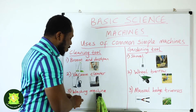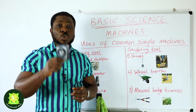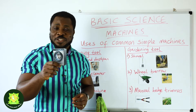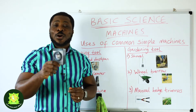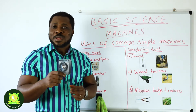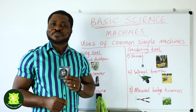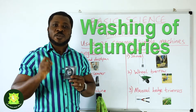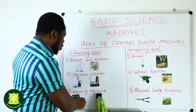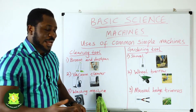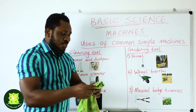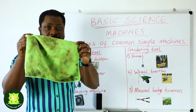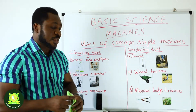Another good example of a cleaning tool in our home is the washing machine. What do you use a washing machine to do? The washing machine is used for washing laundry. Laundry is your dirty clothes and your dirty linen, so the washing machine is used to wash dirty clothes or dirty linen.